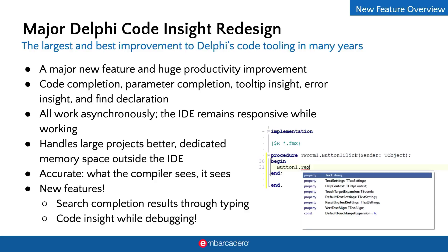This applies to code completion, parameter completion, tooltip insight, error insight, and find declaration — a major new feature and huge productivity improvement within the Delphi IDE. All features work asynchronously, the IDE remains responsive, handles large projects better with dedicated memory space outside the IDE. It's accurate — especially important for error insight, as what the compiler sees, it sees. One favorite feature is searching through typing in completion results, and beta testers have absolutely loved getting Code Insight while debugging.